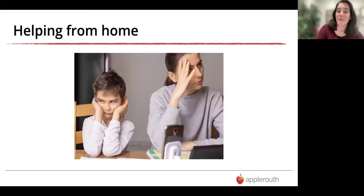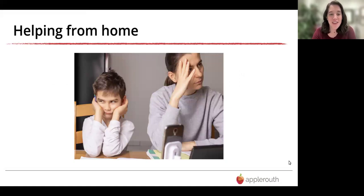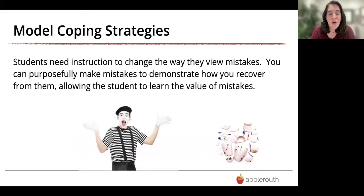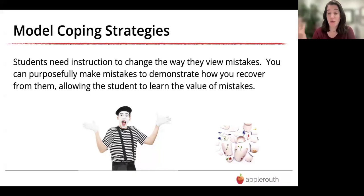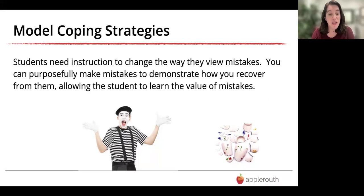Now let's talk about helping out from home and reducing that stress. Overall, students really need instruction to change the way they view mistakes. You can purposefully make mistakes or point out when you make mistakes in everyday life to show that you can recover from them. Students who are neurodiverse often assume that nobody else makes mistakes — that they're the only one struggling — so it can be really helpful to show them that everyone makes mistakes and that's how you learn.